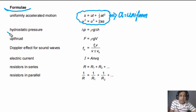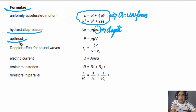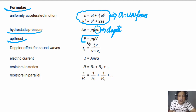The second formula is about hydrostatic pressure, where delta H is the depth. You can use this to calculate the value of upthrust. The upthrust formula is new — it was not in 2021, but it is now included in this list. So this is a very important formula for upthrust.